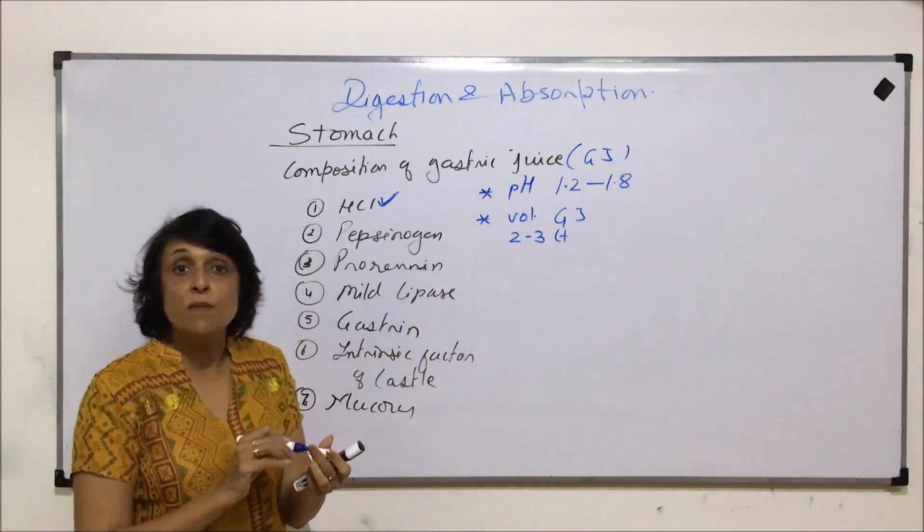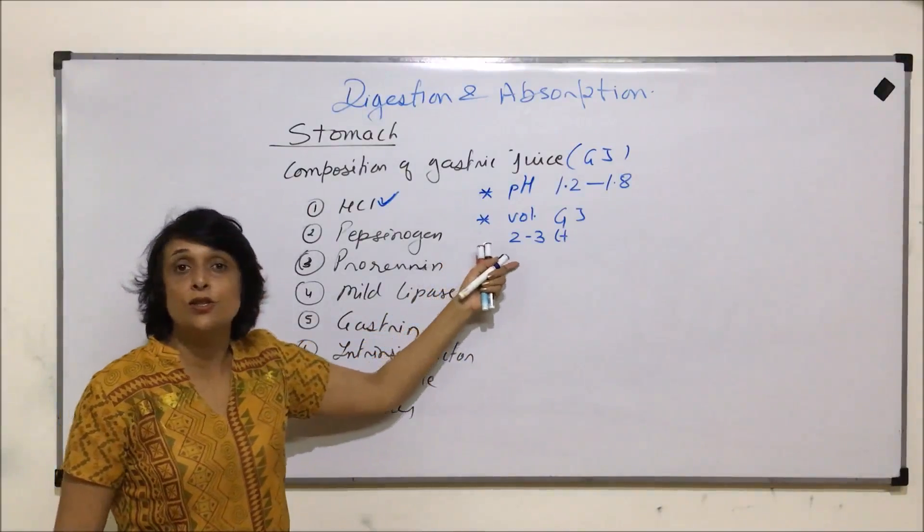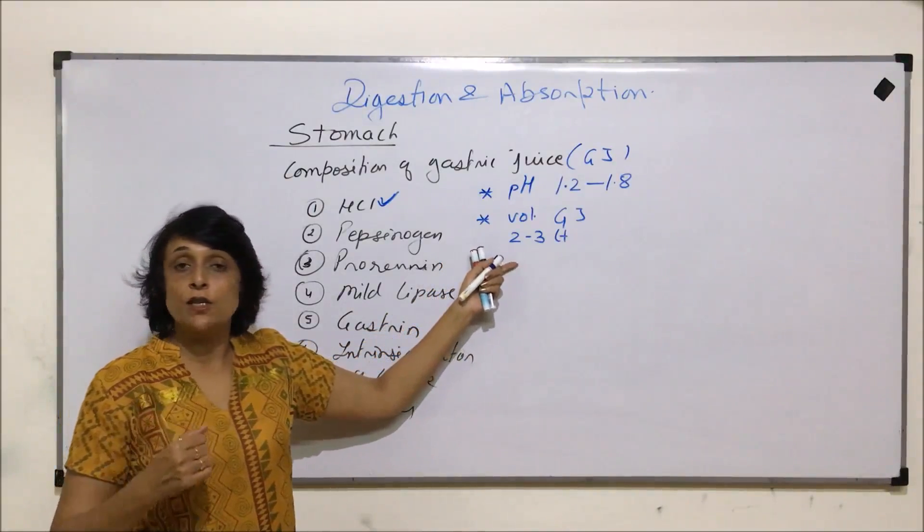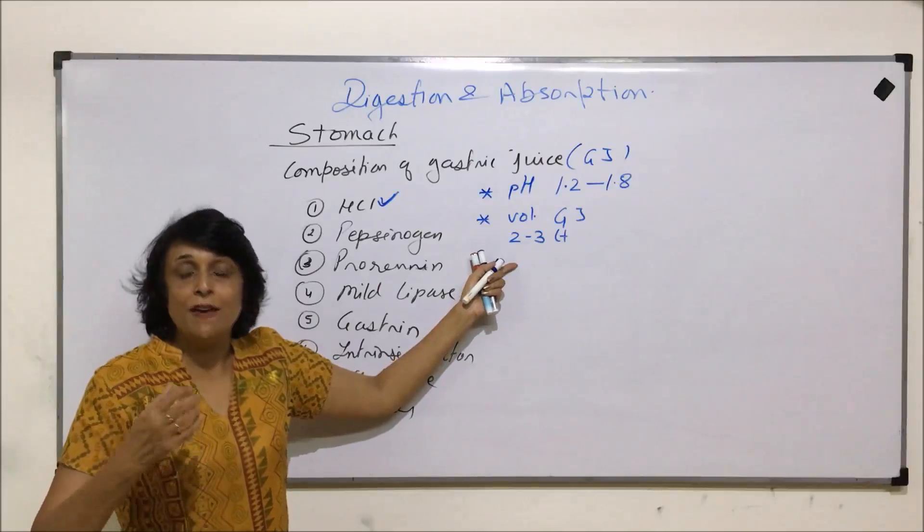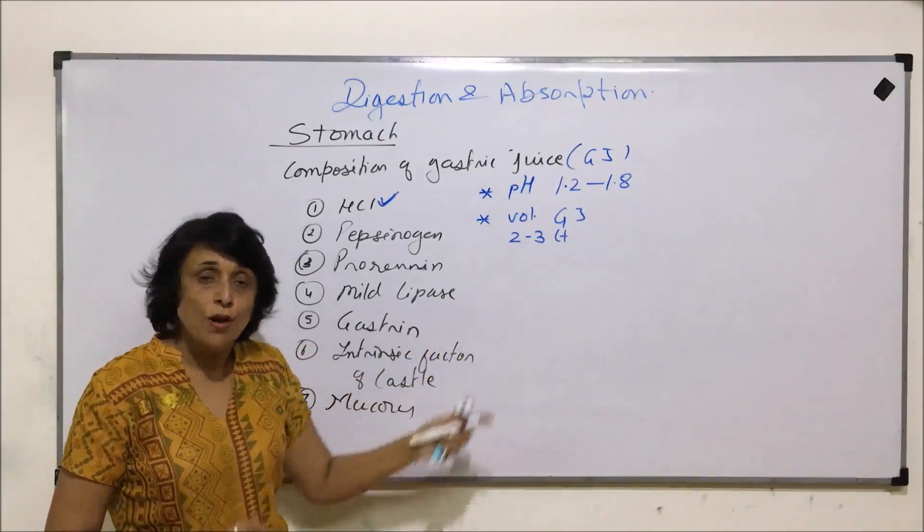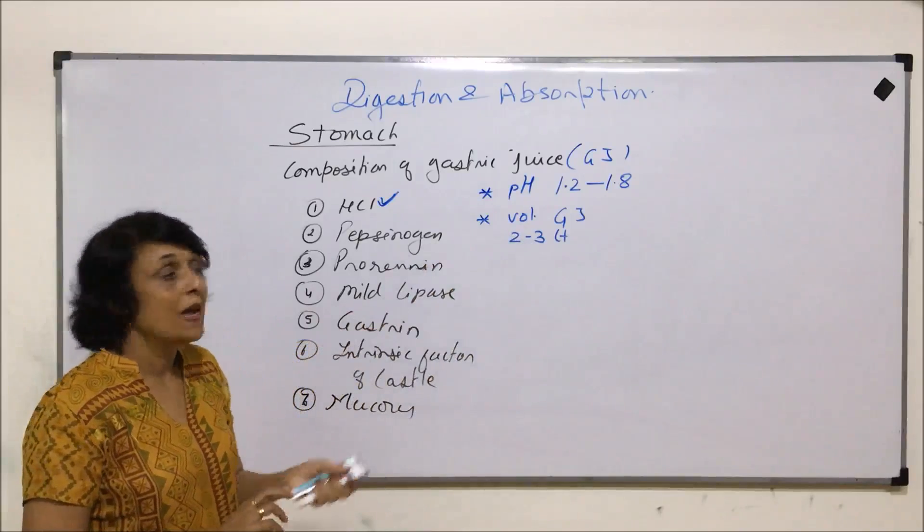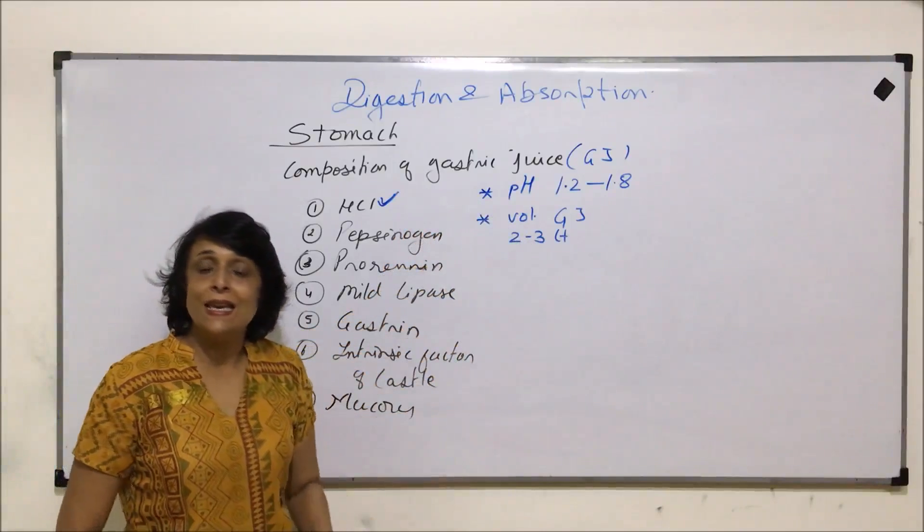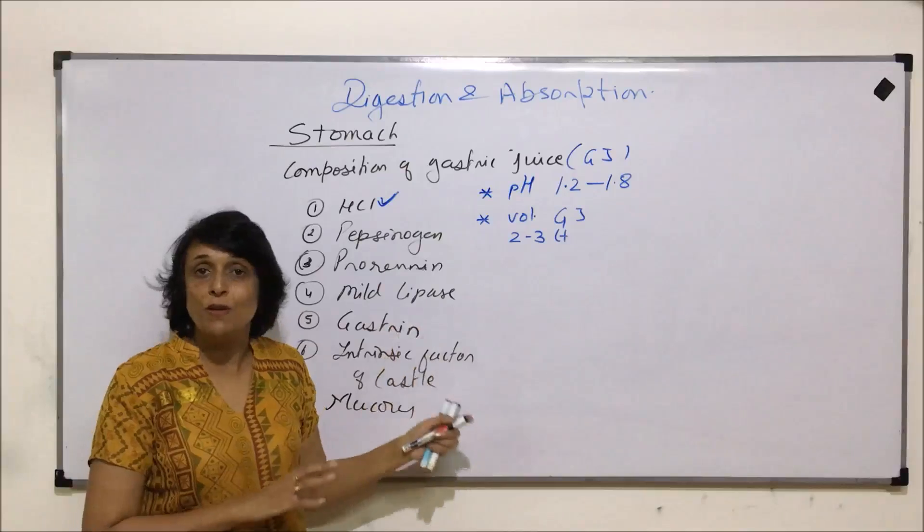Normally, stimulation of secretion of gastric juice is under nervous control. And even when we see food, then also there is gastric juice which is produced. This is what is seen in case of human beings.